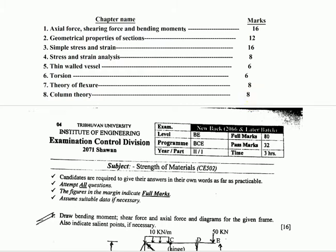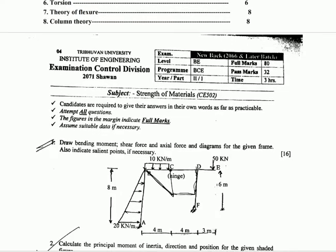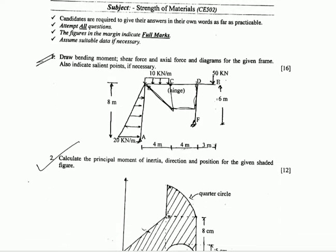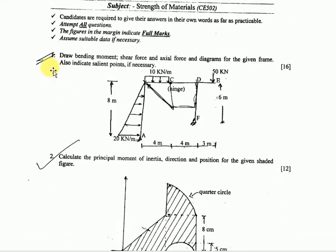The first question asks you to draw bending moment, shear force and axial force diagrams for a given frame, and also indicate salient points if necessary. This question is from chapter 1.